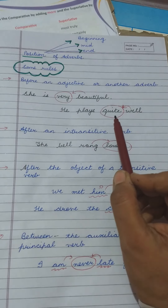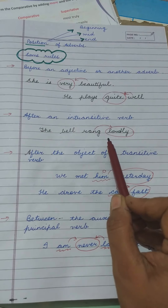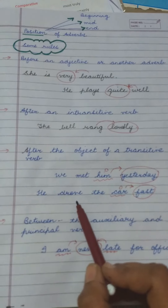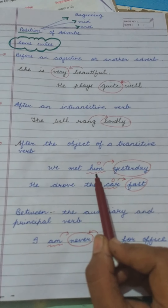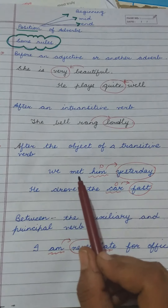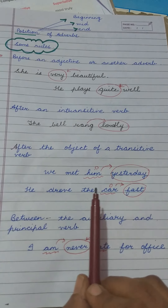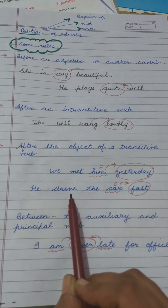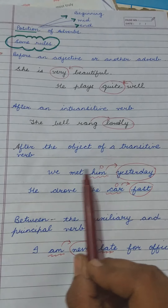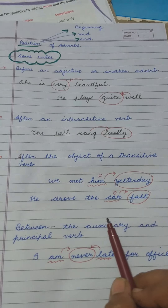It cannot be 'the bell loudly rang' — that is wrong. The third rule: adverbs are placed after the object of a transitive verb. Transitive verbs like 'met' and 'drove' require an object. To find the object, ask 'what' or 'who.' For example: 'We met him' — 'him' is the object. 'He drove the car' — 'car' is the object. Adverbs go after the object because transitive verbs want their objects near them.